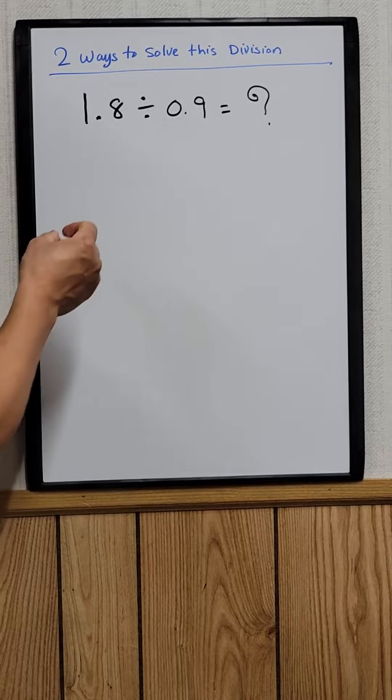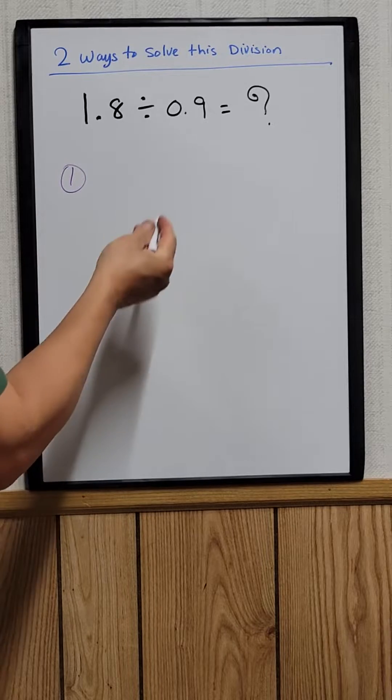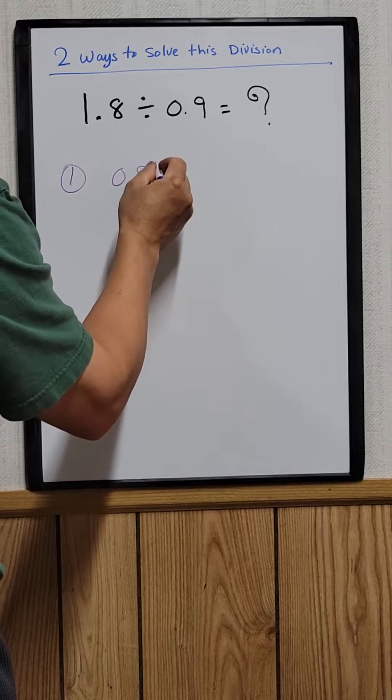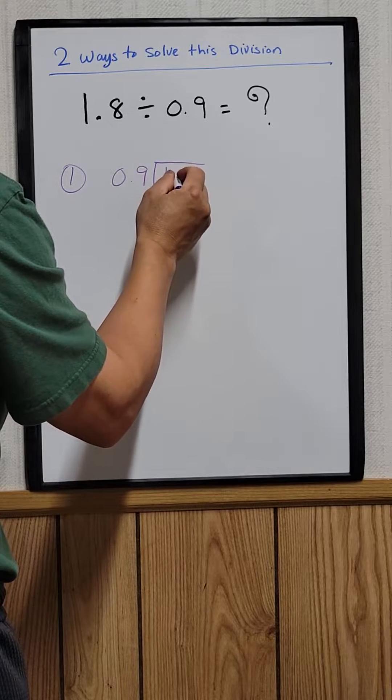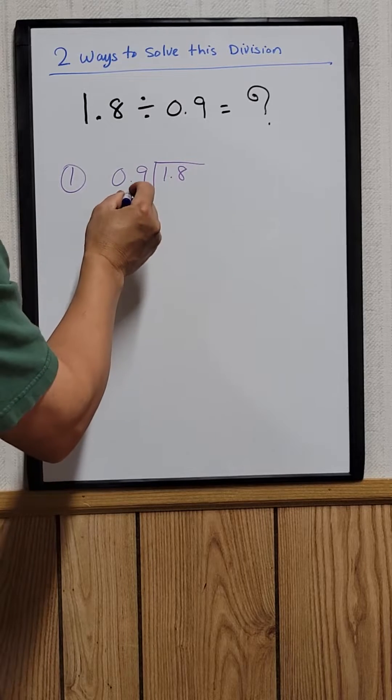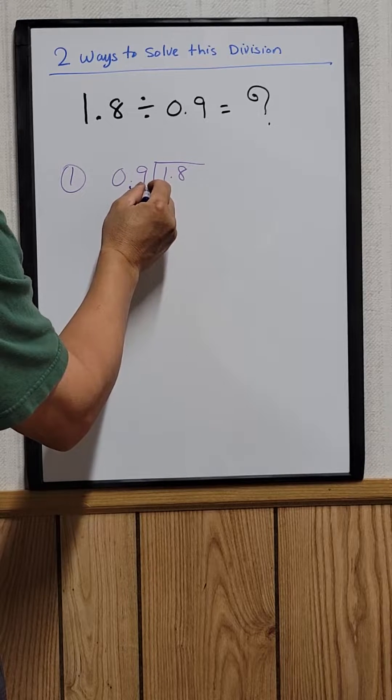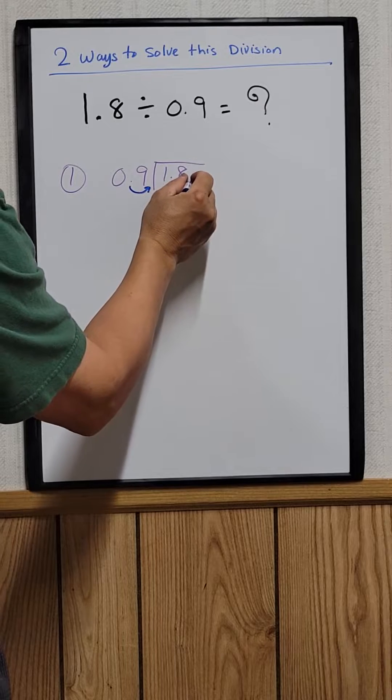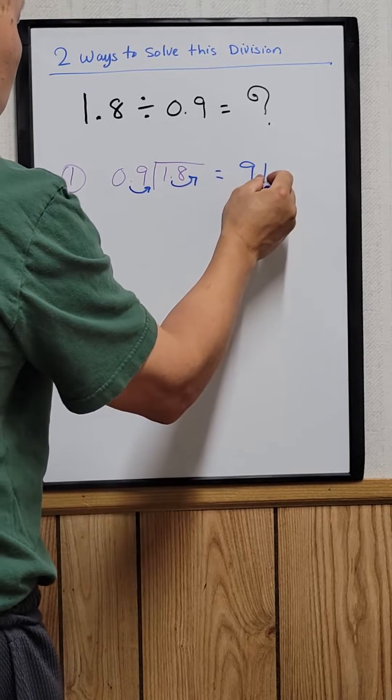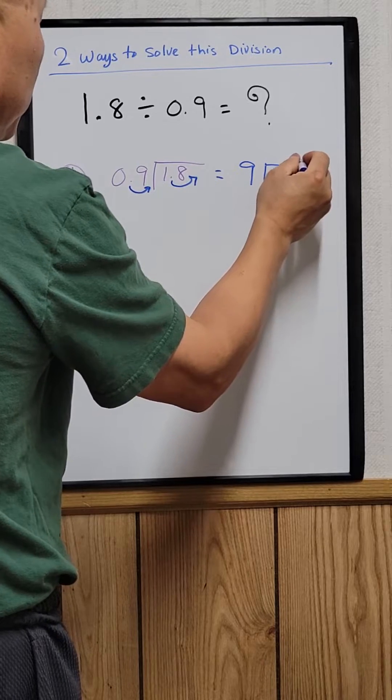So the first way would be just to do the regular division: 1.8 divided by 0.9. So remember that you've got to move the decimal point right here. When you move it in, you move this too. So basically it's just saying that 18 divided by 9, which is equal to 2.